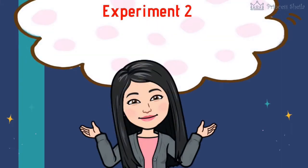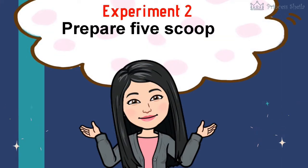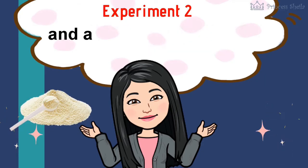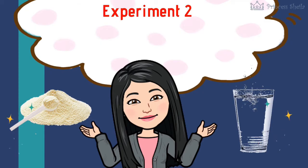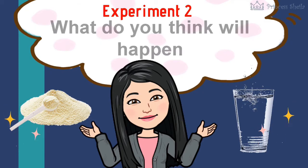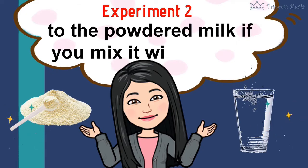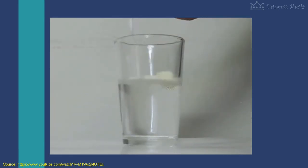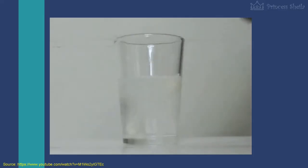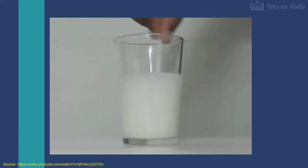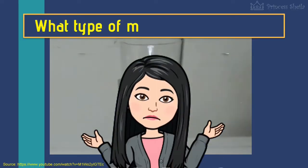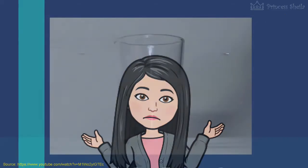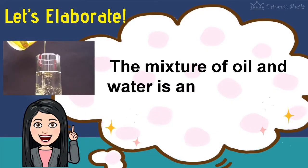Now let's go to our second experiment. Prepare five scoops of powdered milk and a clear glass of water. What do you think will happen to the powdered milk if you mix it with water? Let's see. What type of mixture did we form? Let's elaborate — the mixture of oil and water is an example of suspension.